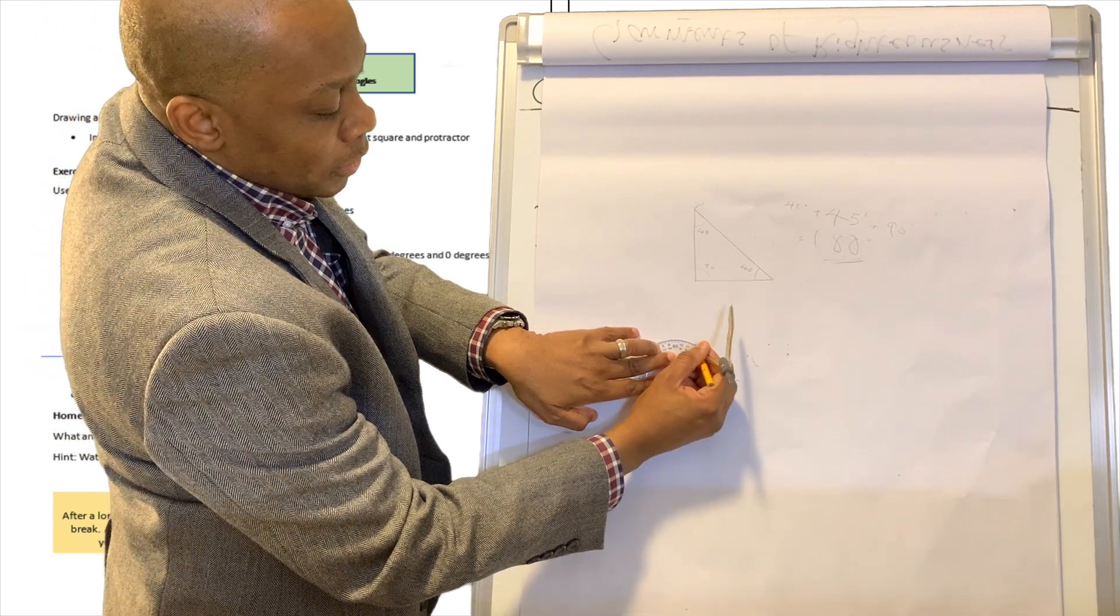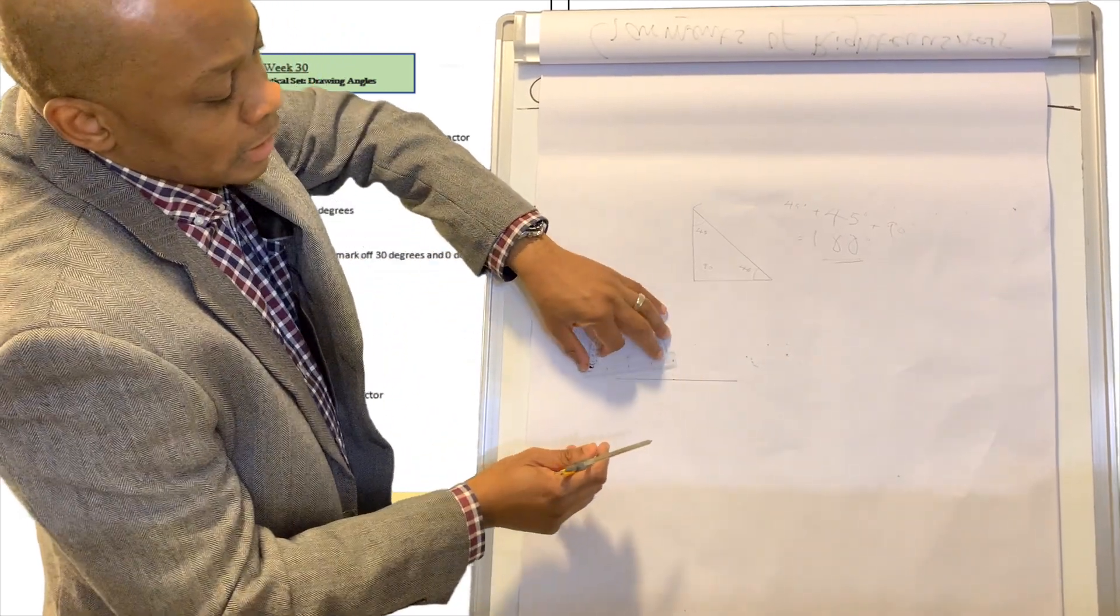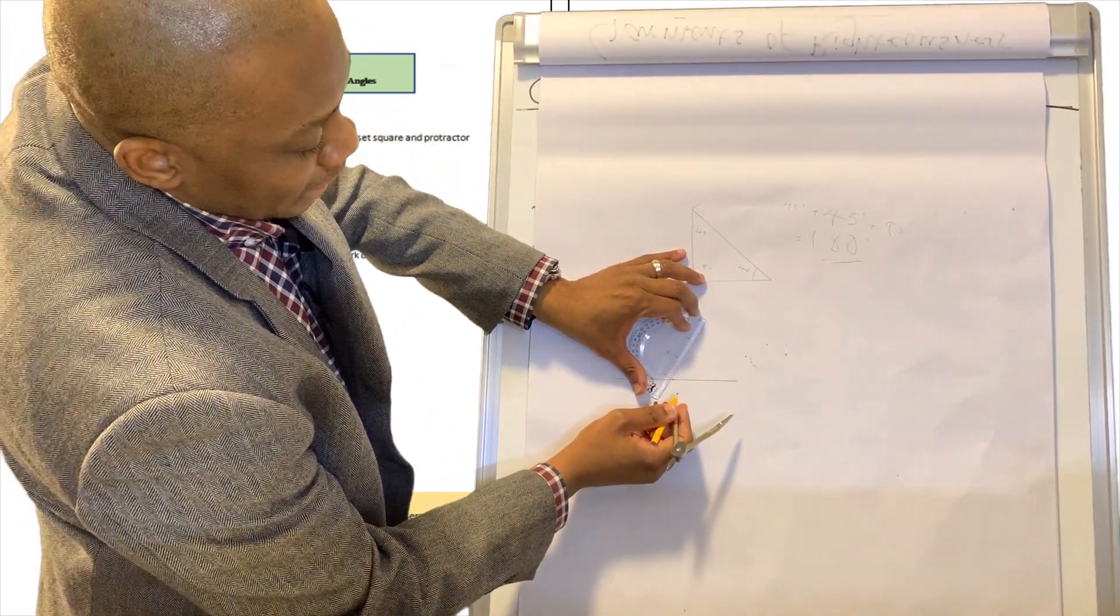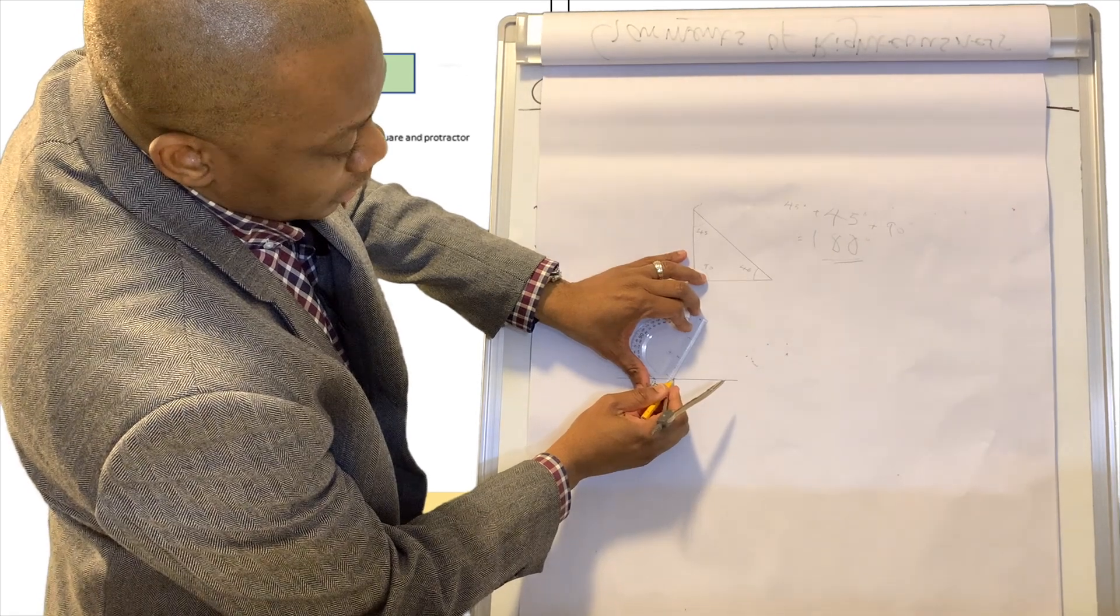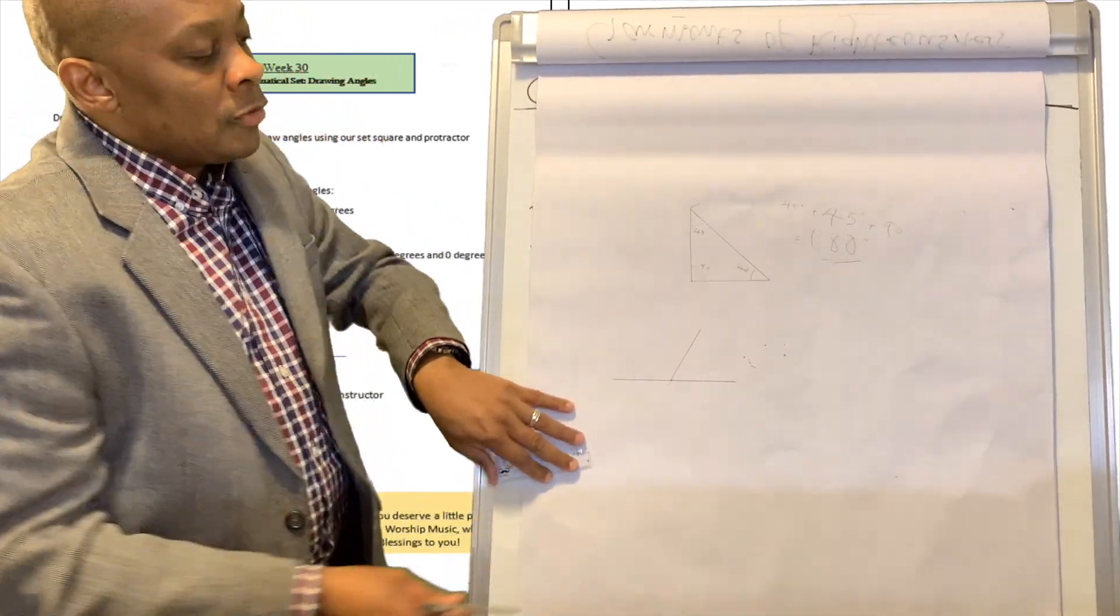So you're going to put a dot. Put a dot there like that. Just a dot like that. And then you are going to connect the dot. You can connect the dot like that. Connect it to here just like that. So I'll connect it to there.